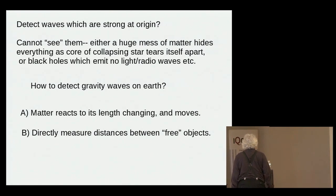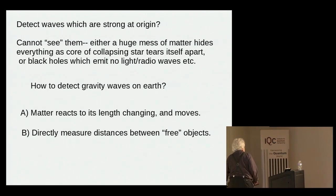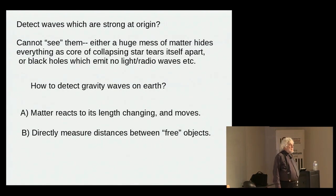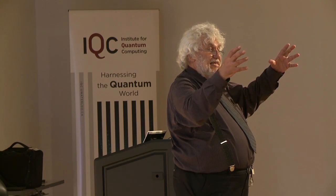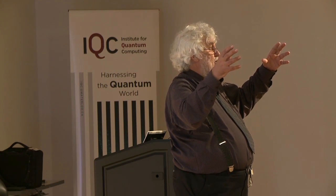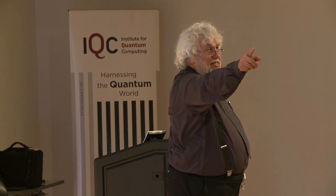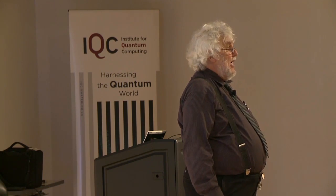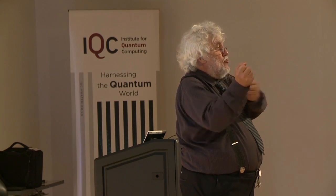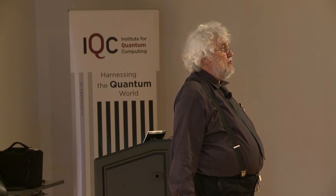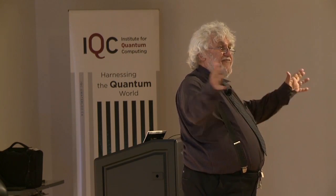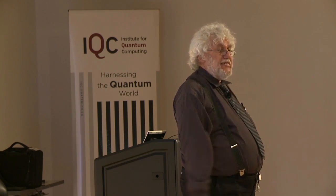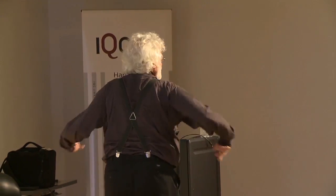There are basically two ways of detecting them. The first way, tried by Joe Weber, was that when distances between atoms change a little bit in a big lump of aluminum, the aluminum tries to pull the atom back - and it responds by placing pulls and pushes on itself. The gravity wave has started it ringing, and you might be able to see that ringing. The second way is to directly measure that change in distance from one place to the next.